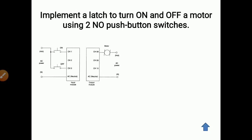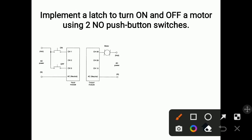Here is the input module and output module. On the output module side, motor is connected to channel number eight. Channel number one and channel number three have two push buttons connected — one is an ON-type push button and one is an OFF-type, meaning one is normally open and one is normally closed. The other lines are AC power lines.